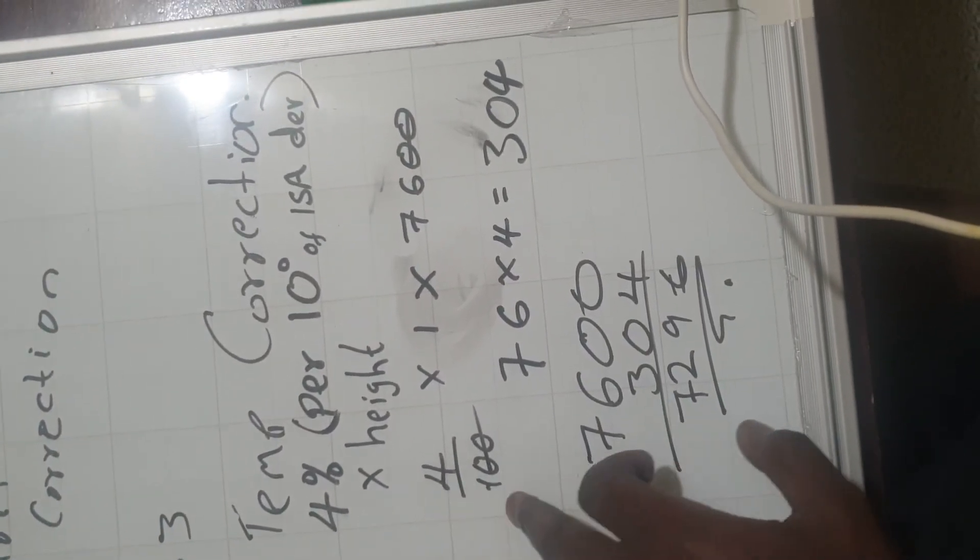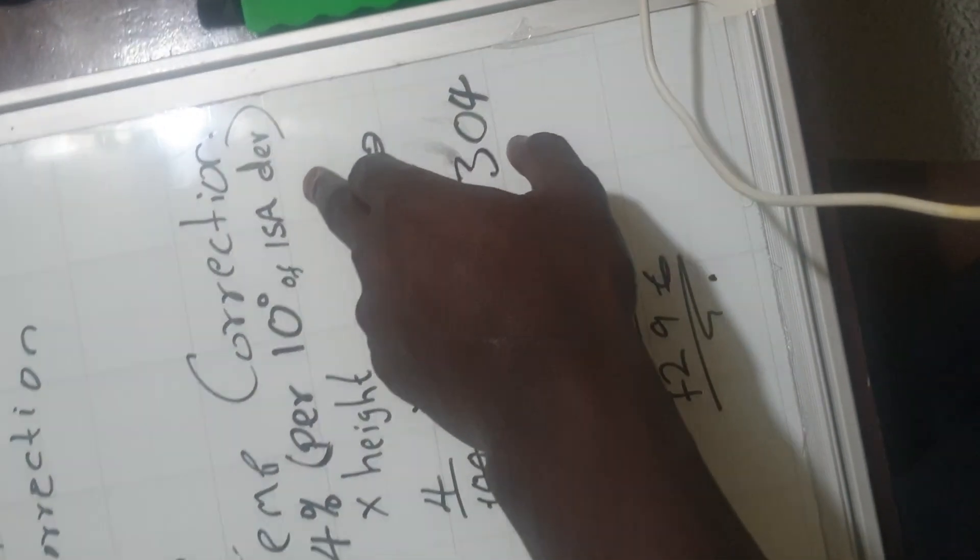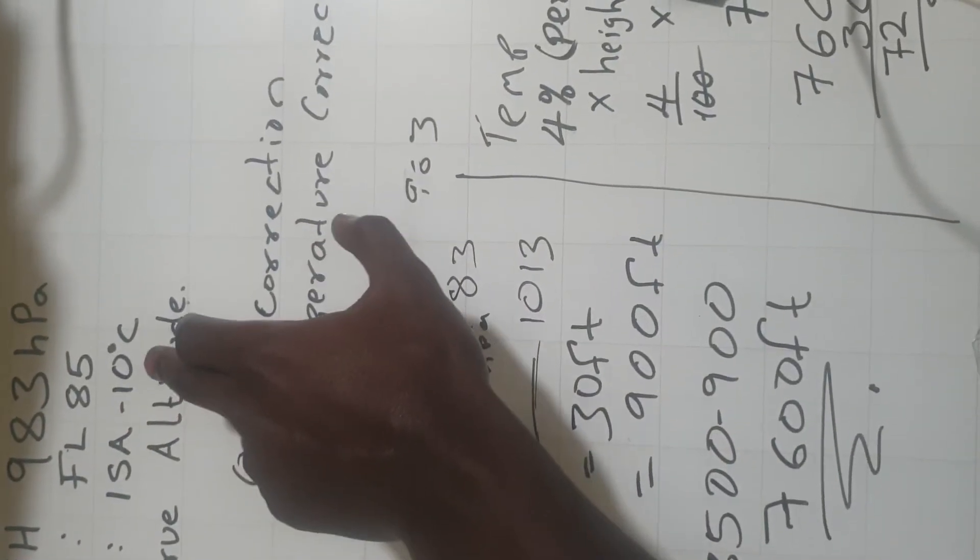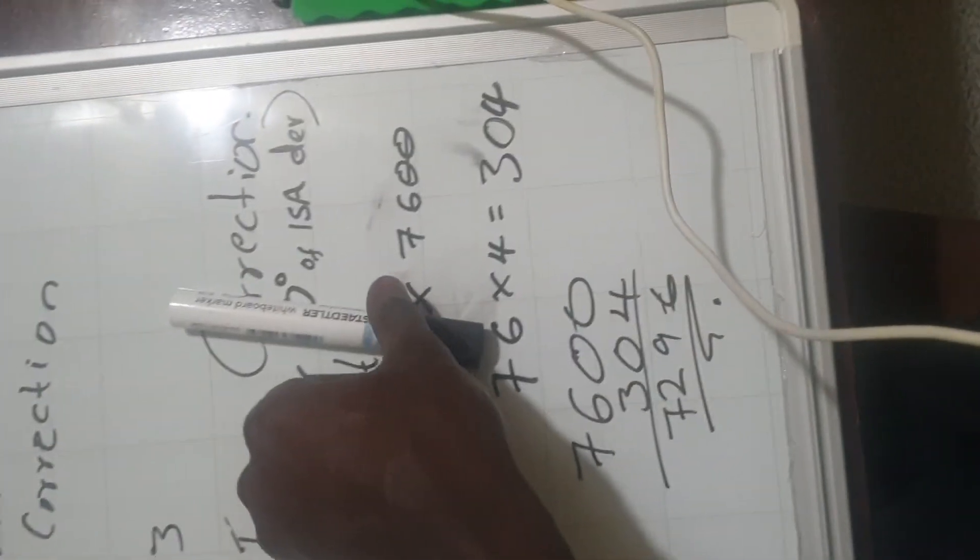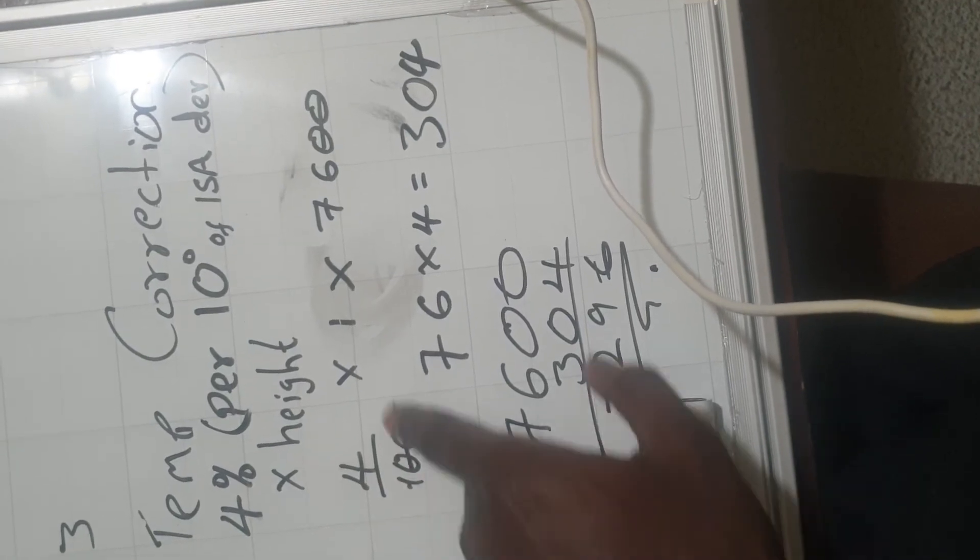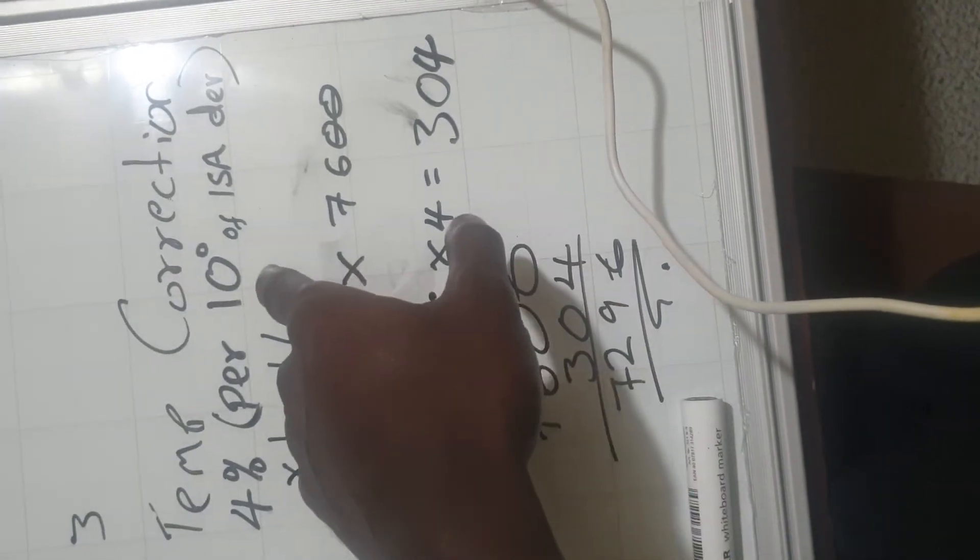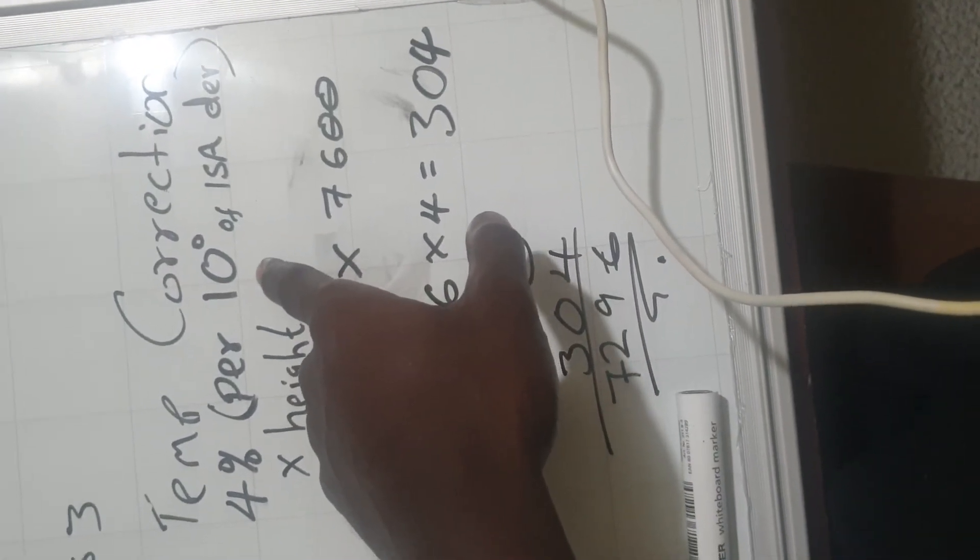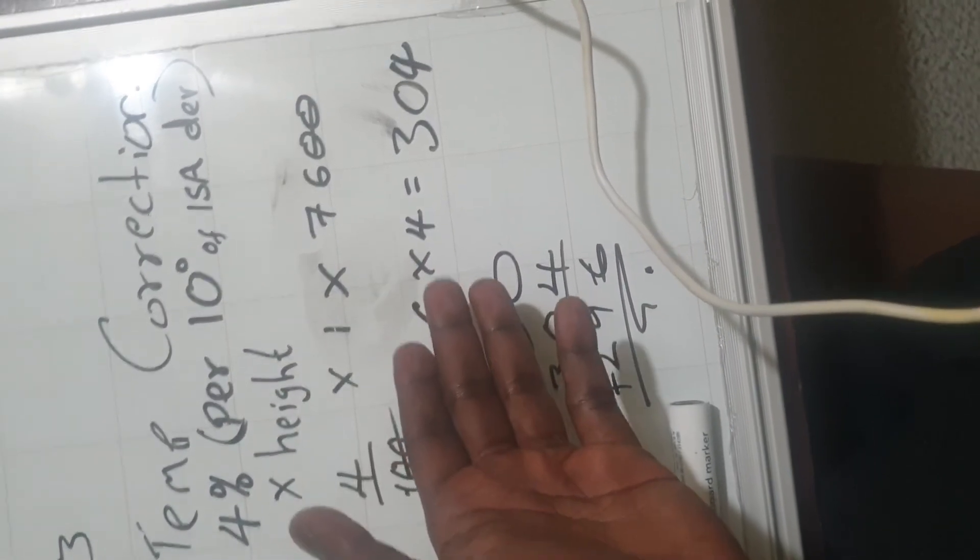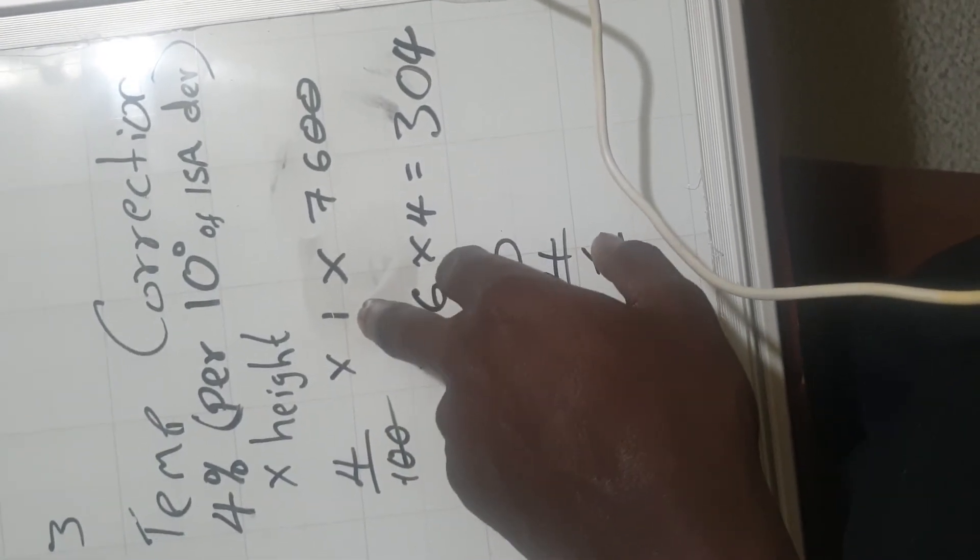So 4% per 10 degree of ISA deviation. So for our case, it was perfect because it was ISA minus 10. So the deviation was just 10 degrees. So there is only 4% that we use. So it's 4% times how many 10 deviations is 1. So if, for example, it was 15 or 25, say plus 25, you would have put how many 10s are there in 25 degrees. Those are 2.5. So you would have put 2.5 in this place.